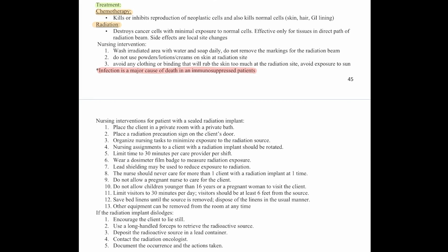Nursing interventions for patients with a sealed radiation implant: place the client in a private room with a private bath, and place a radiation precaution sign on their door. Organize nursing tasks to minimize exposure to the radiation source. Nursing assignments to a client with a radiation implant should be rotated. Limit time to 30 minutes per care provider per shift. Wear a dosimeter film badge to measure radiation exposure. Lead shielding may be used to reduce exposure, and the nurse should never care for more than one client with a radiation implant at one time.